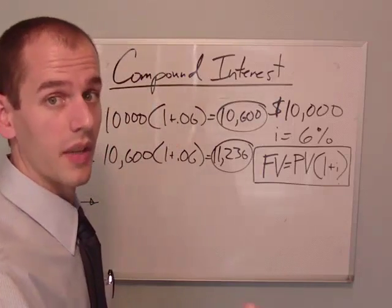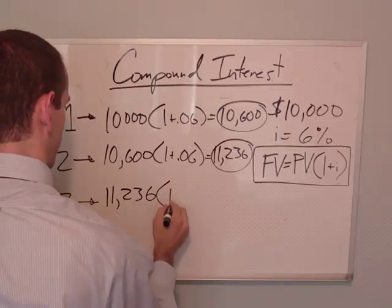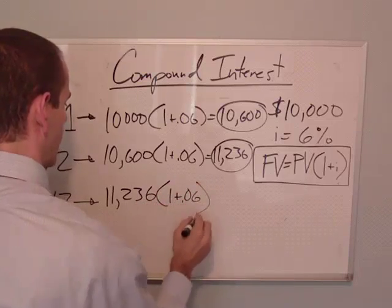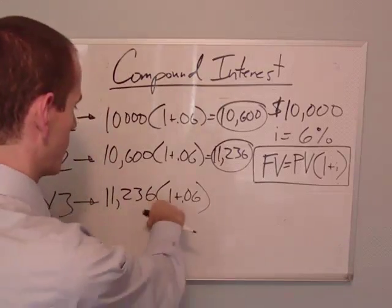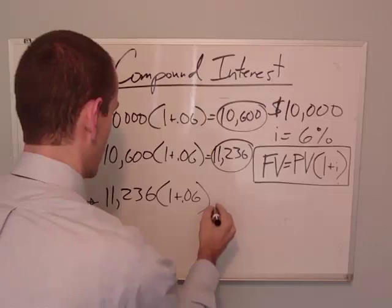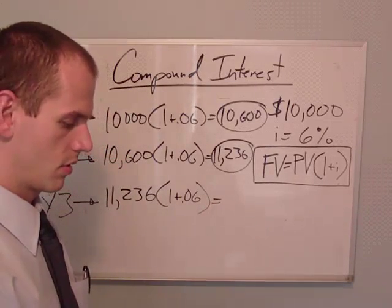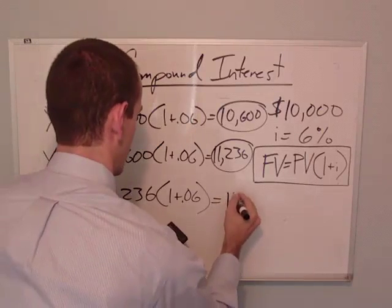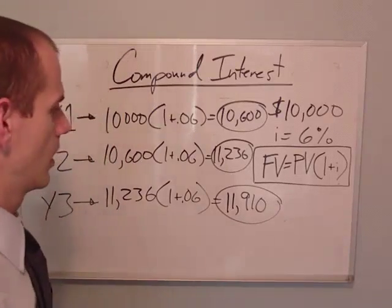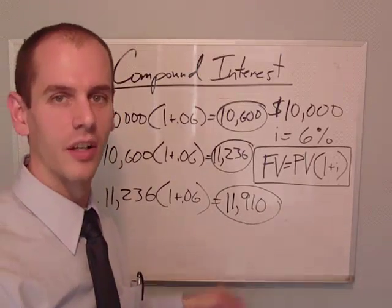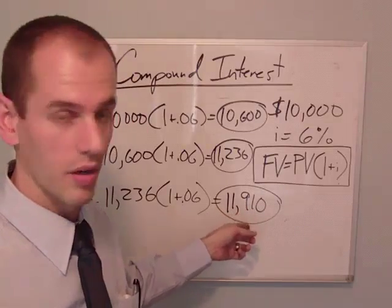So year three, that's what we're starting out with. So year three, at the beginning, we have this much in our account. Multiply it by our equation here. And we get $11,910. That's how much you'll have in your account at the end of three years.